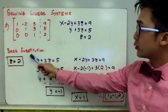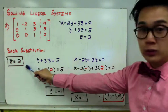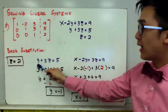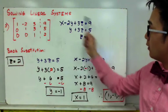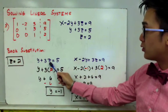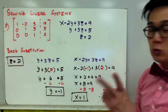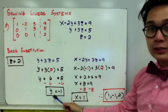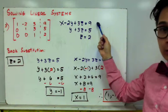Using back substitution with z equal to 2, we substitute into the second equation, y plus 3z is equal to 5. Replacing z with 2, we get y plus 6 is equal to 5, giving us y is equal to negative 1. Now we have the values of both z and y for our three-variable linear system.